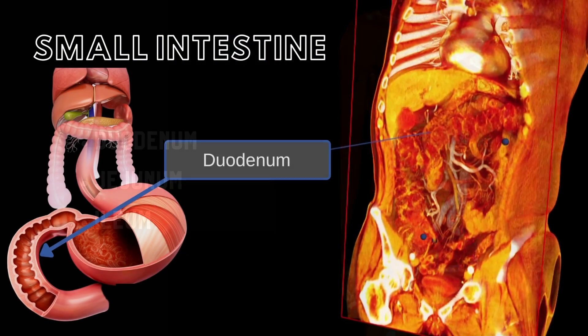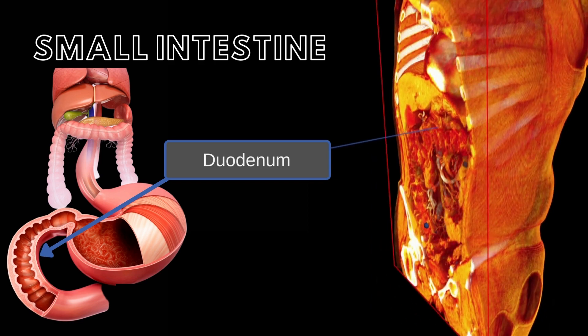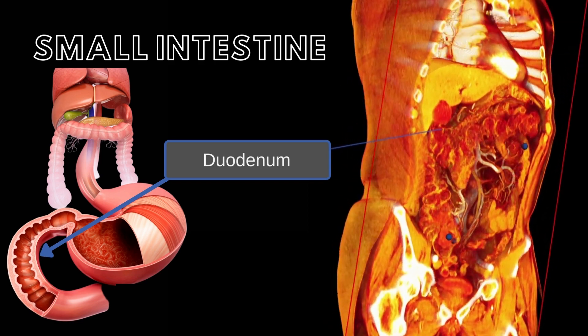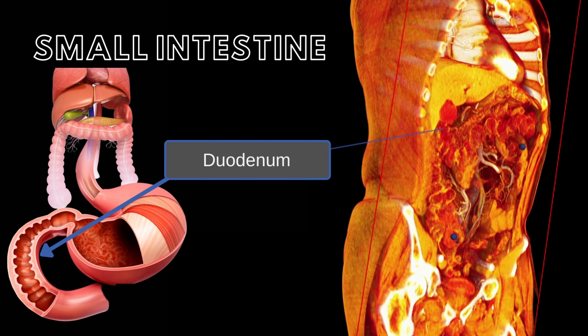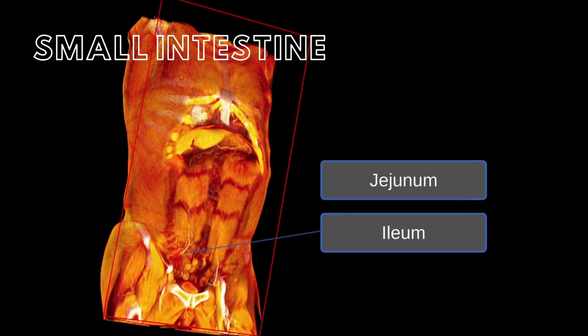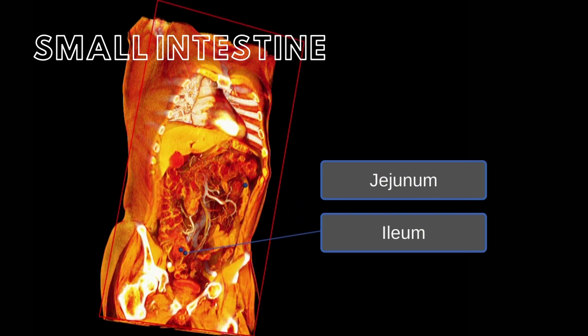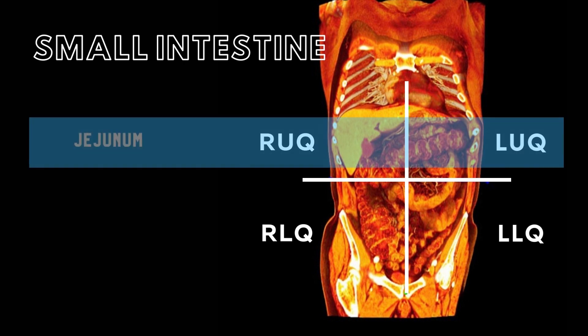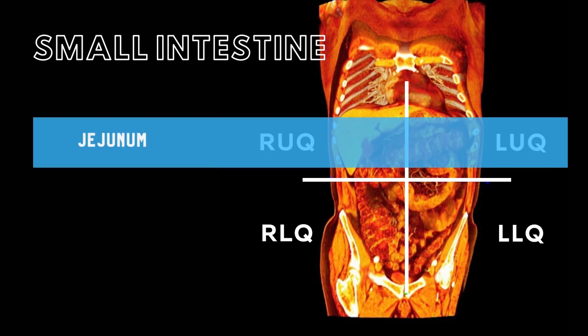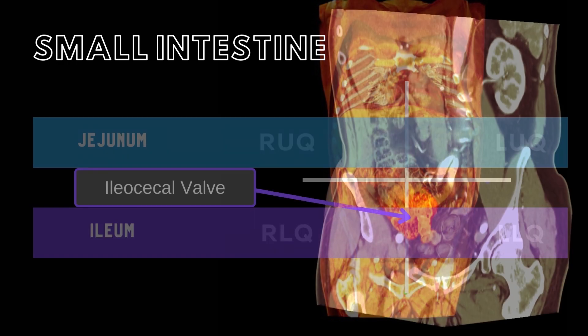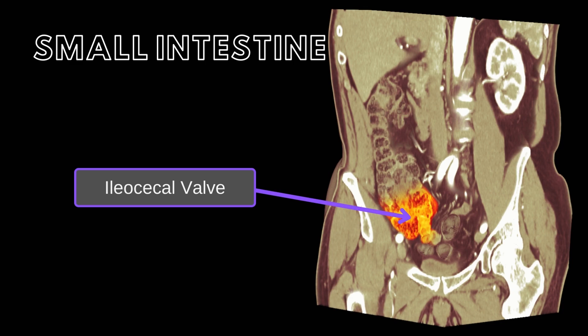The duodenum is the first and shortest part of the small intestine, being approximately 25 centimeters long. This section is also the widest and least movable part of the intestine. The jejunum and ileum have a combined length of approximately six to seven meters. The jejunum is found within the right and left upper quadrants of the abdominal cavity, and the ileum is within the right and left lower quadrants. The ileum ends at the junction of the cecum and the large intestine.